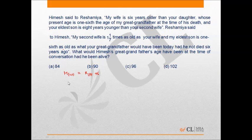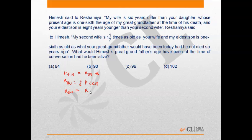Whose present age is one sixth of the age of my great grandfather at the time of his death. So Rd is equal to 1/6 of Himesh's great grandfather. And your eldest son — son of Rashmiya — is 8 years younger than your second wife: wife of Rashmiya minus 8.